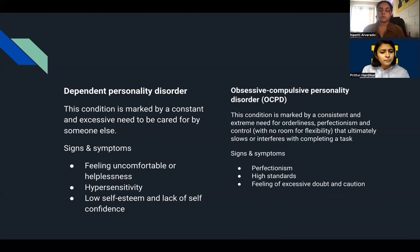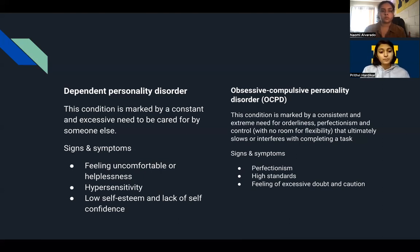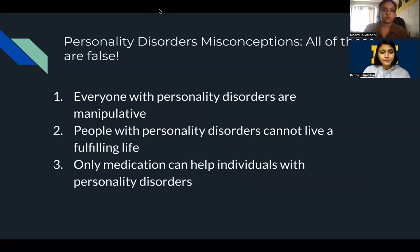Obsessive-Compulsive Personality Disorder is marked by a consistent and extreme need for orderliness, perfectionism, and control that ultimately slows or interferes with completing tasks and can interfere with relationships. Signs and symptoms include perfectionism, high standards, excessive doubt and caution. This is a separate condition from Obsessive-Compulsive Disorder, which is classified as an anxiety disorder. While people with OCD are usually aware their condition is causing their behavior and accept the need to change, people with OCPD often have little self-awareness of their behaviors. People may also have mixed symptoms of more than one personality disorder.